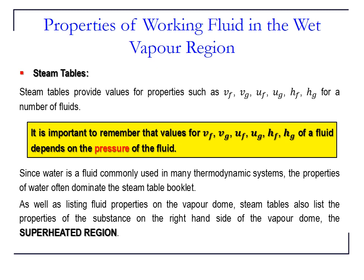Now we come to the steam tables. By using the steam table and given the pressure of the fluid, we can find many other properties such as specific volume, internal energy, and enthalpy. I will use another video to show how to use the steam table, since it is difficult to demonstrate here in PowerPoint, showing how to find all these properties for different pressures.